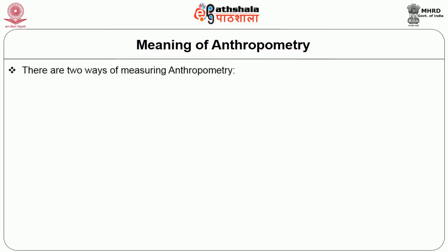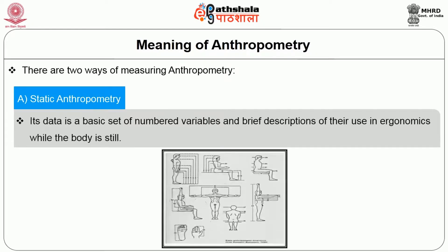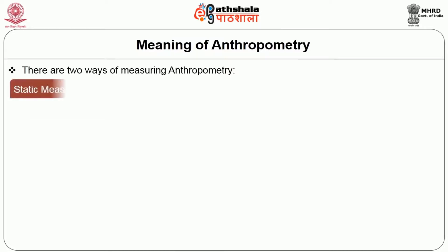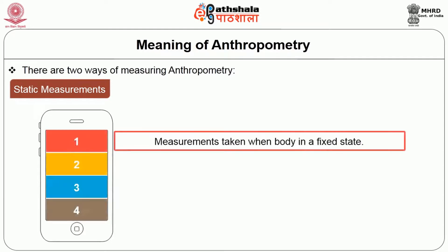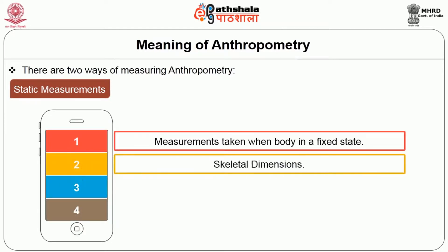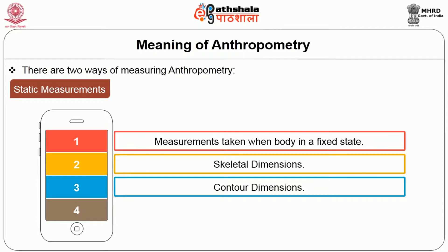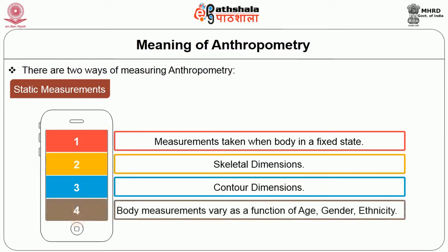There are two ways of measuring anthropometry: static and dynamic. Static anthropometric data is a basic set of numbered variables and descriptions of their use in ergonomics while the body is still. Static measurements are taken when the body is in a fixed state — including skeletal dimensions between centers of joints such as between the elbow and wrist, contour dimensions, skin surface, and head circumferences. Body dimensions can vary as a function of age, gender, ethnicity, and nutrition.